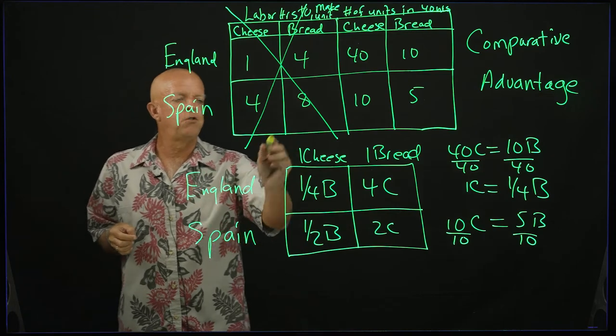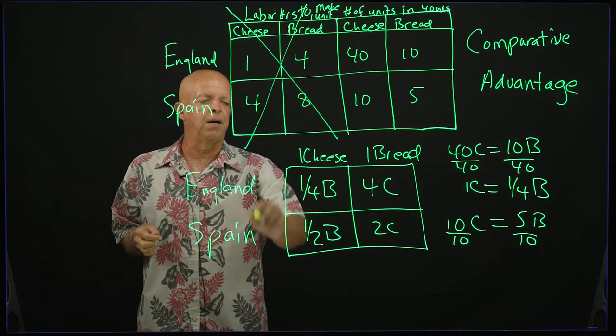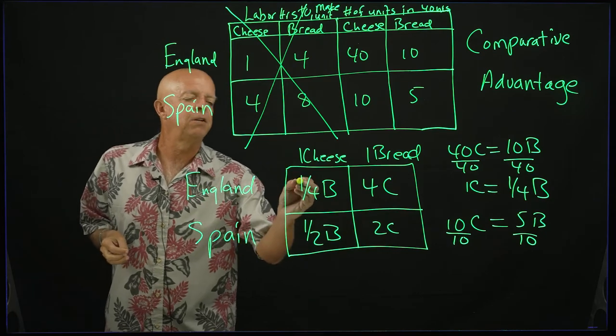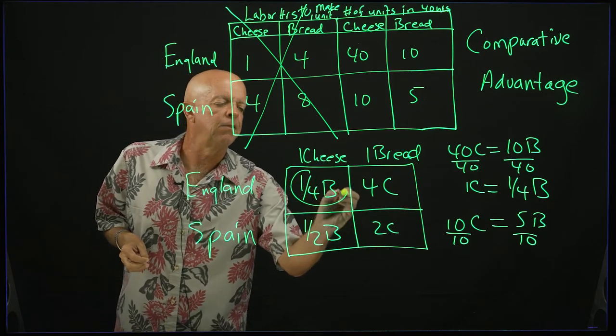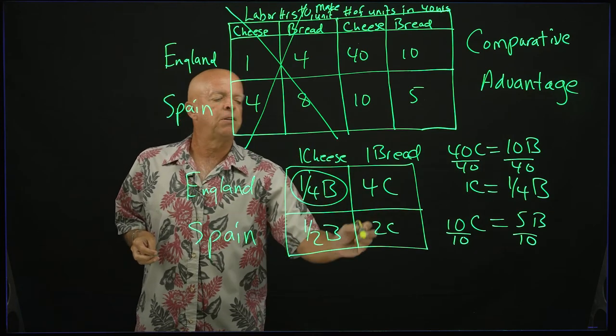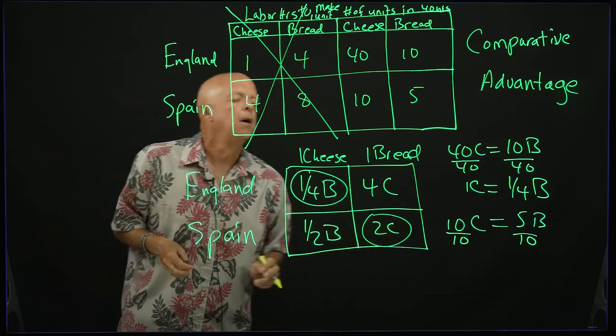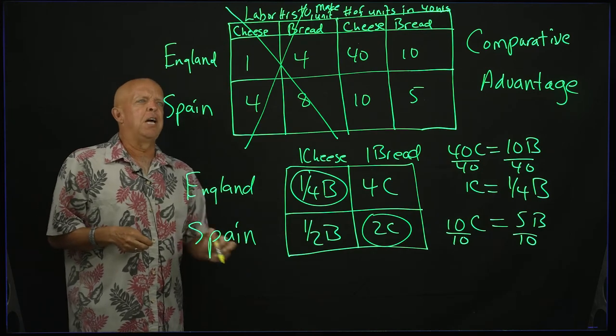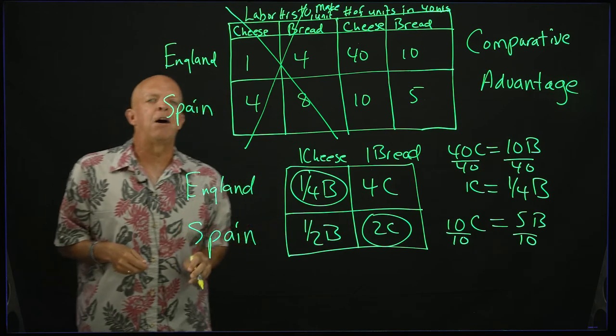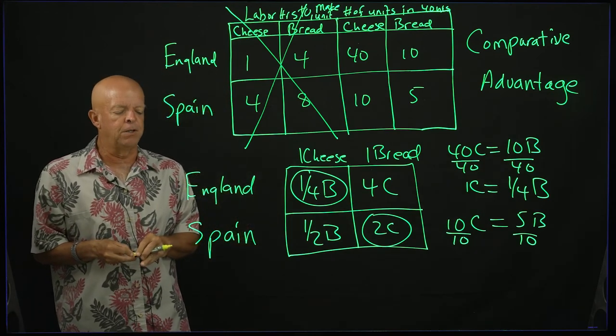In the case of cheese, you look at it this way. In the case of cheese, who is giving up the least, it is England giving up the least. And in the case of bread, who's giving up the least, it is Spain. While you can have an absolute advantage in more than one good, it is impossible to have a comparative advantage in more than one good.